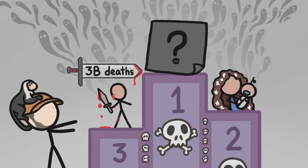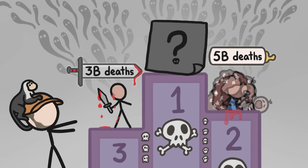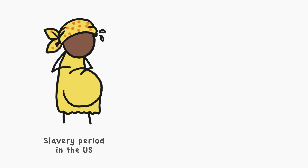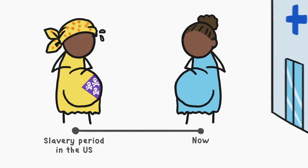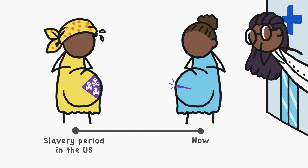Then there's childbirth, which has killed more than 5 billion women throughout history, mostly from bleeding and other complications. In some particularly grim eras, more than 25% of the women giving birth likely died. Nowadays, because many babies are born in modern hospitals under trained supervision, far fewer women die during childbirth. But the number is still shockingly high — around 300,000 each year.